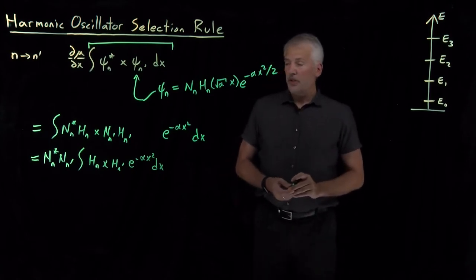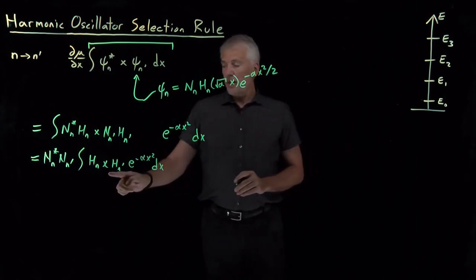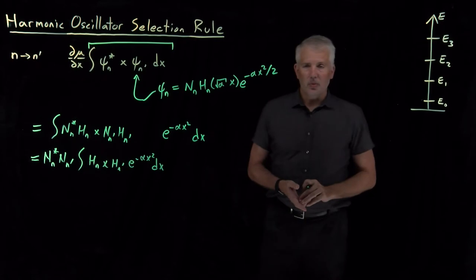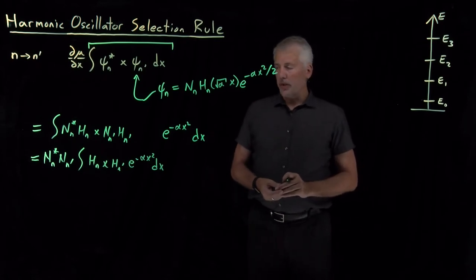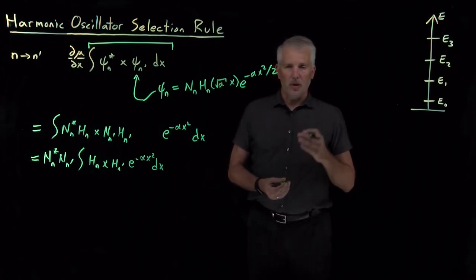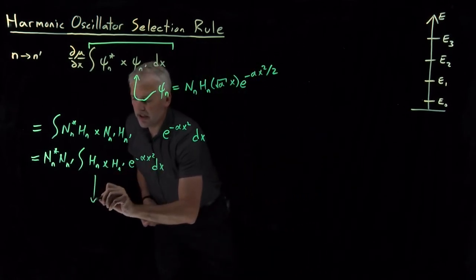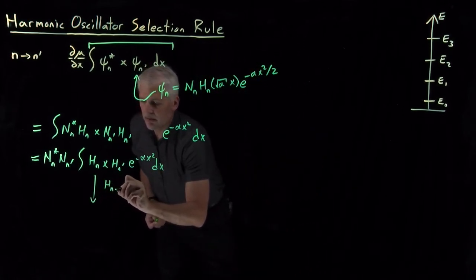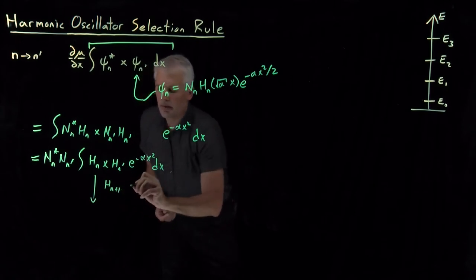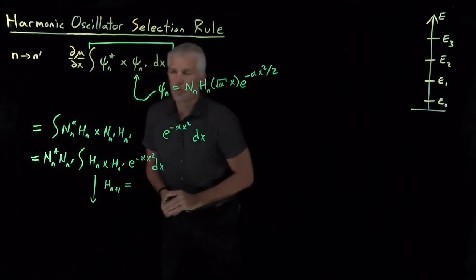Now the trick is to remember that we know something about these Hermite polynomials. We know there's a recursion relation that relates the Hermite polynomials to the ones just above or just below them. That recursion relation tells us that the n plus 1st polynomial is equal to...